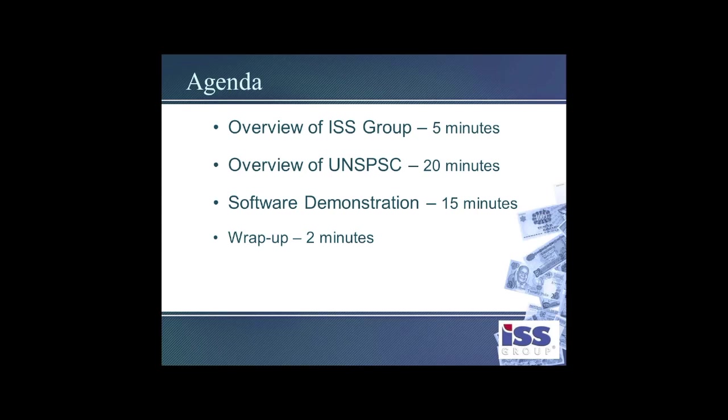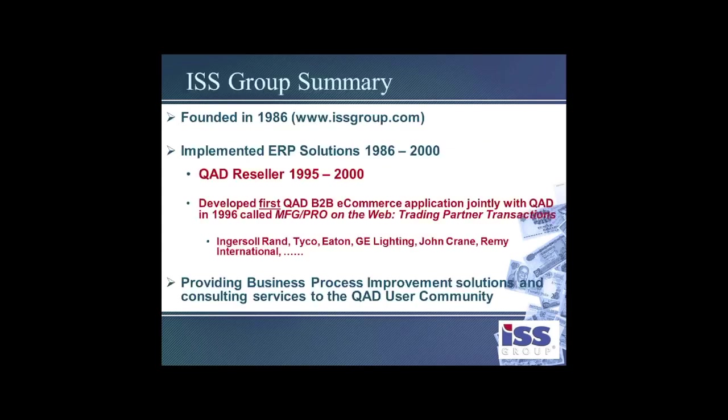ISS Group was founded in 1986. We are now in our 27th year of business. For the first 14 years, we were a reseller and implementer of various ERP solutions for the manufacturing and distribution community. More specifically, from 1995 to 2000, we were a reseller and implementation service provider for the QAD solution at that time known as MFG Pro.